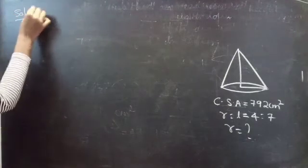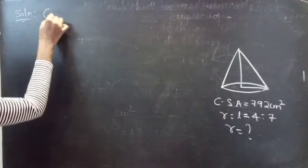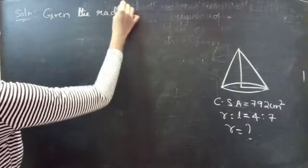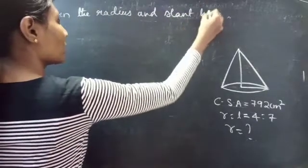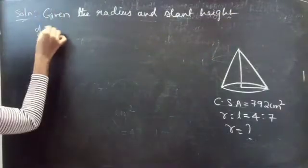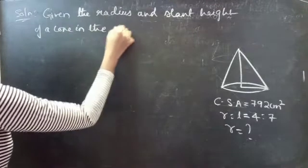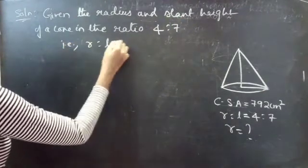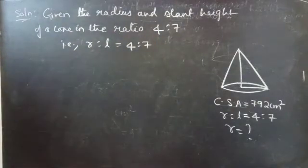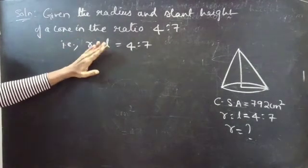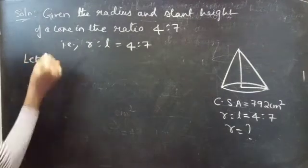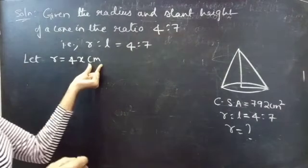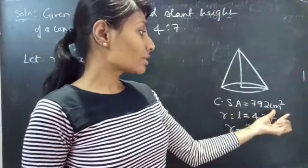Solution. We are given the radius and slant height of a cone where R to L equals 4 is to 7. Let's consider R equals 4x cm. We are taking cm because we are given the curved surface area in cm².